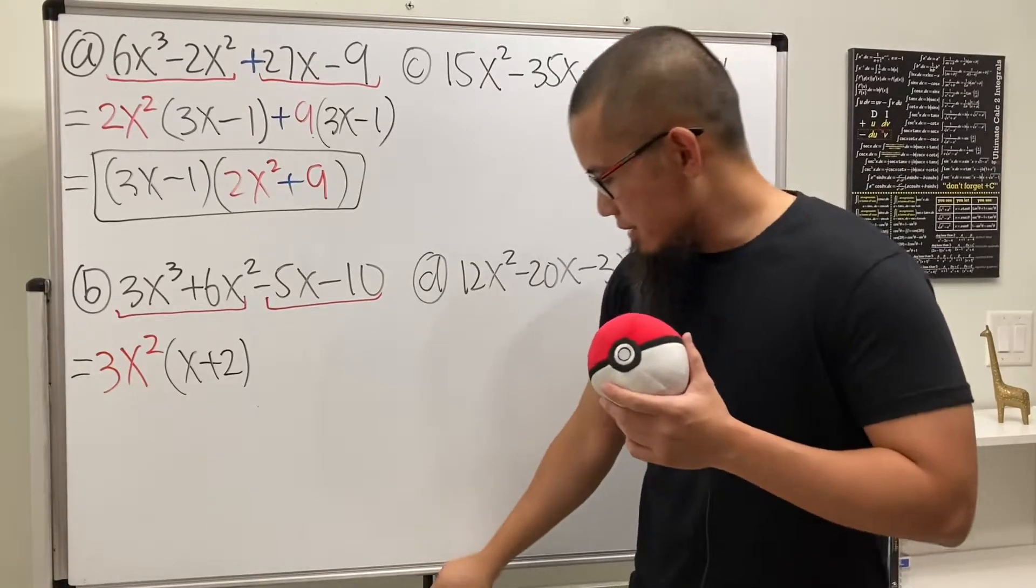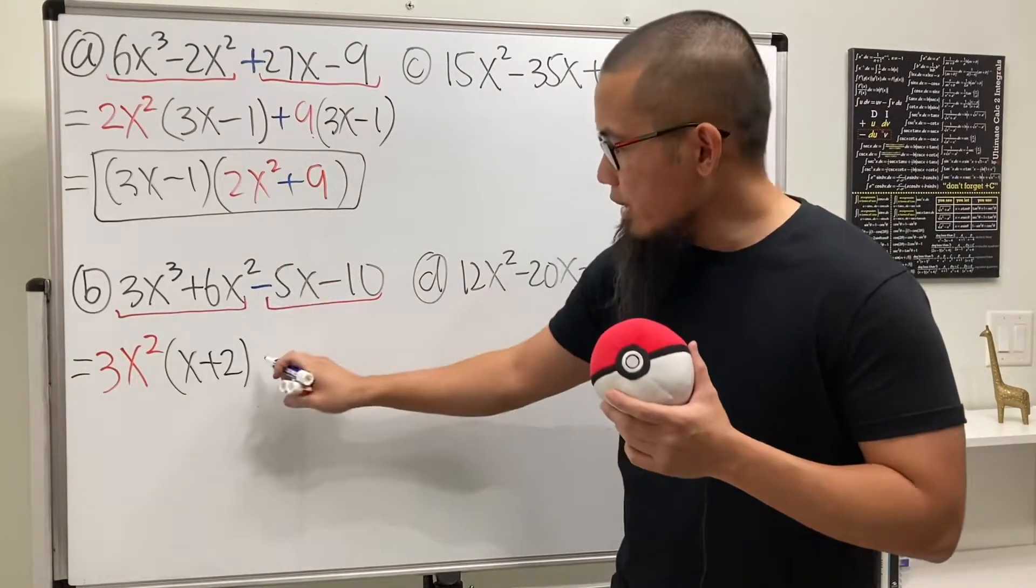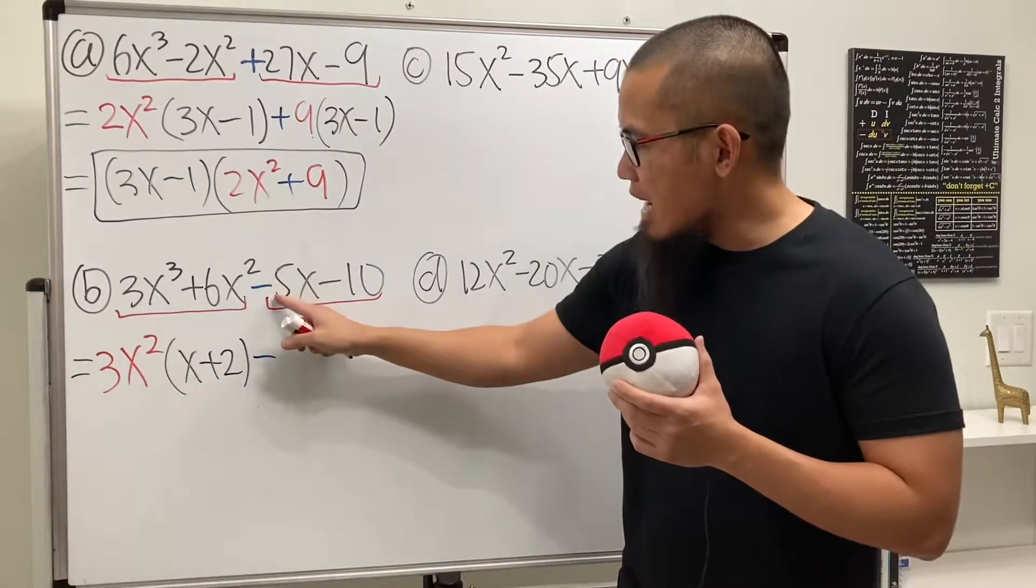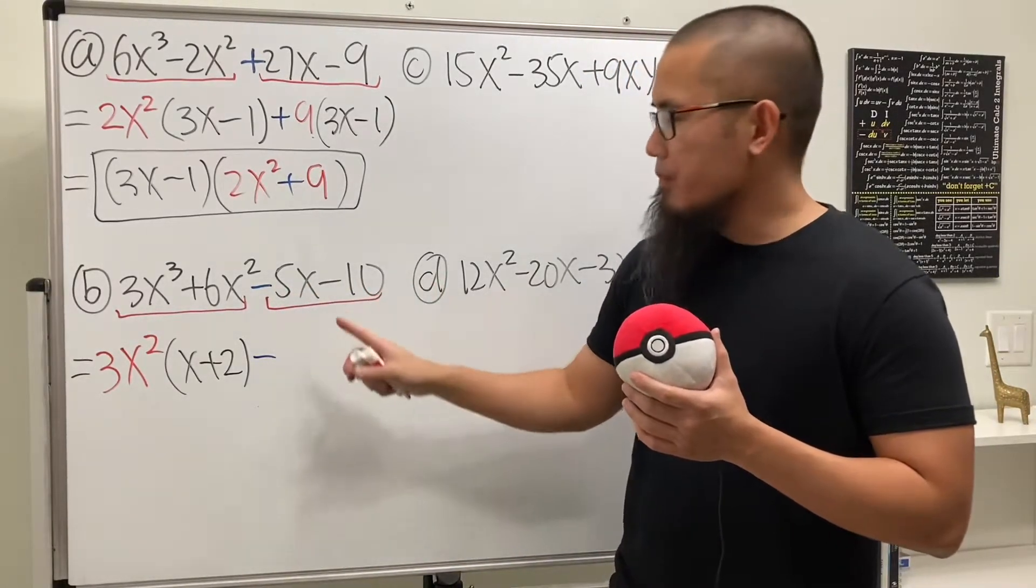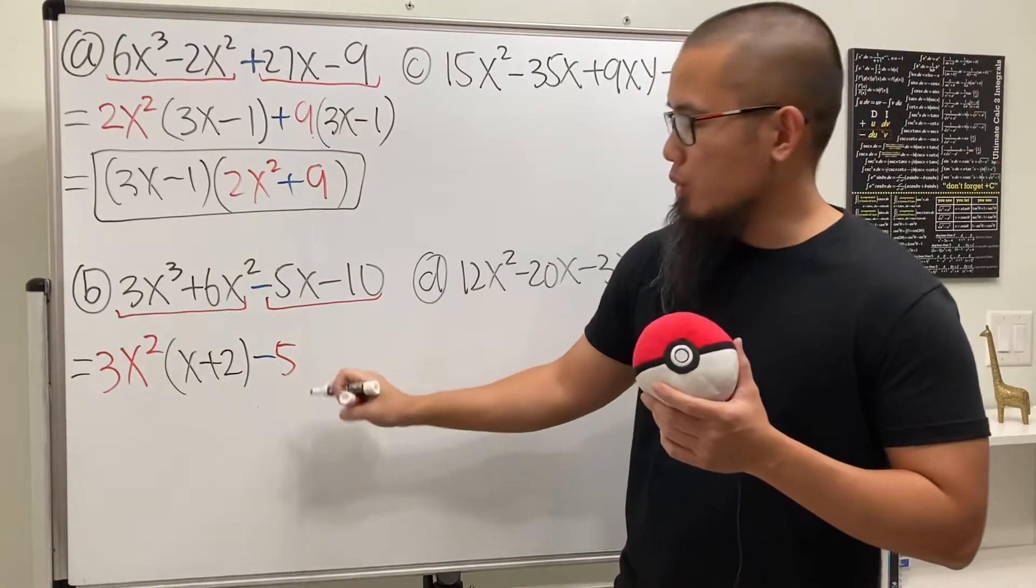Now, here's the deal. This is a minus. Bring that down right away. And now we see the 5 and 10. Just look at the number. We are going to factor out a 5.